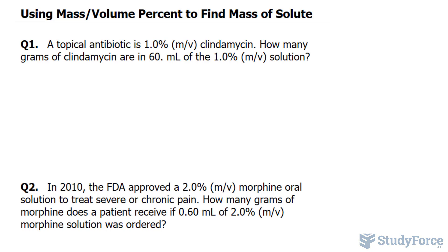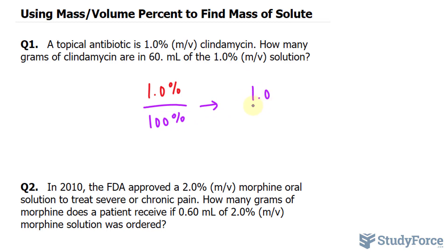To do a problem like this, it doesn't hurt to know a little bit about percentage. We have 1.0%, and I want to convert this percentage into a fraction because that will give us an idea of mass and volume. To convert a percentage into a fraction, we divide by 100%. So 1.0% divided by 100% gives us 1 over 100, and we can say that we have 1 gram of clindamycin per every 100 milliliters — a mass unit over a volume unit.